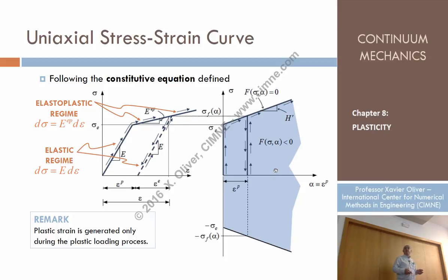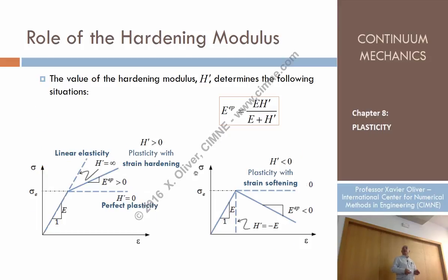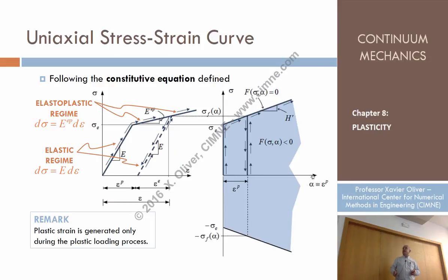That is what is called perfect plasticity. On the contrary, if H prime is greater than zero, the elastic limit can be increased after the initiation of plasticity. Plasticity increases the elastic limit — as we increase the plastic strain, the yield stress increases. That is what is called hardening: the material hardens with the evolution of plastic strain.